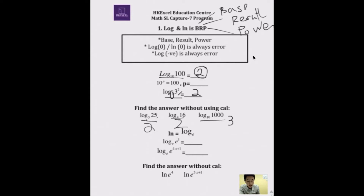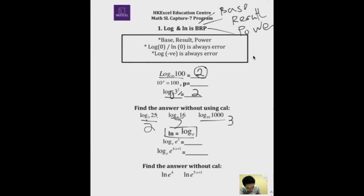And log base 10 of 1000 — 10 to the power of what equals 1000? Obviously 3. Another thing students get confused about is LN. What does LN mean? LN is log to the base e — they're the same thing.